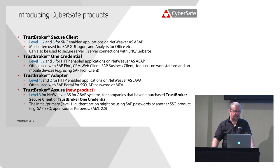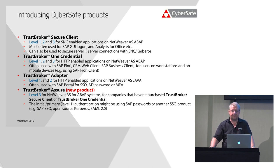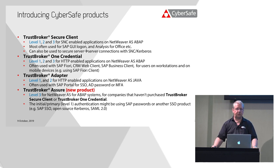Trust Broker Assure is designed for customers who are already using some form of authentication for SAP and want just the level three functionality we offer. If you've already bought our Trust Broker Secure Client or One Credential product, you don't need Assure because you get that functionality included. We've taken out the level three functionality and turned it into a product we can sell to complement what customers already have.